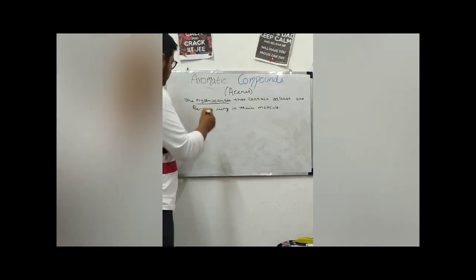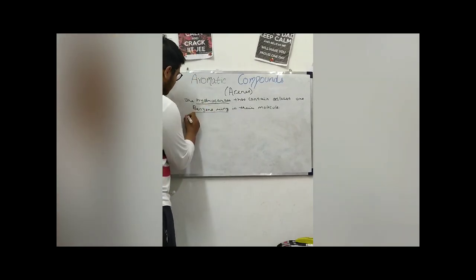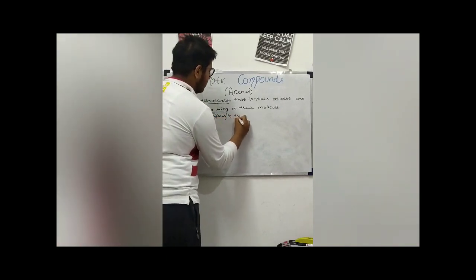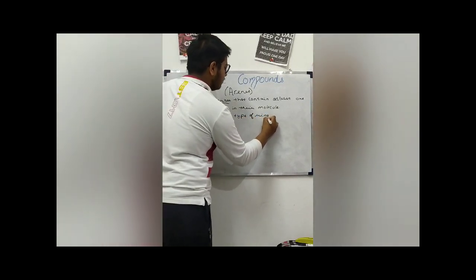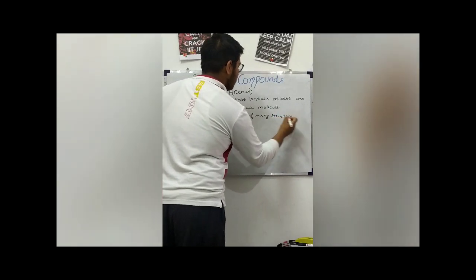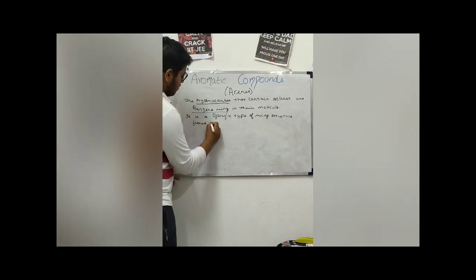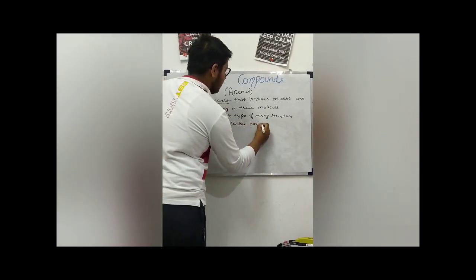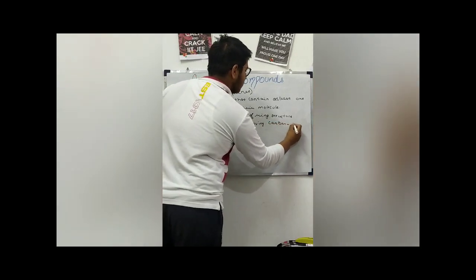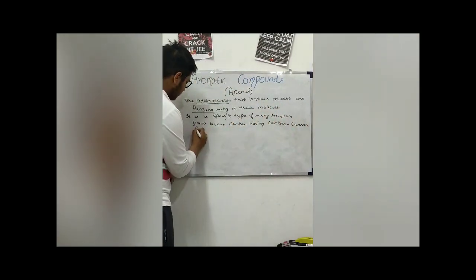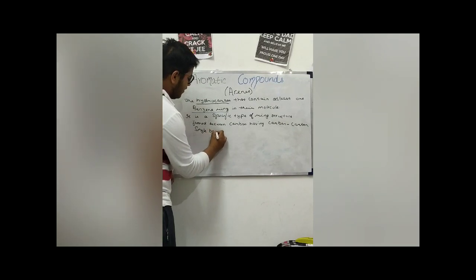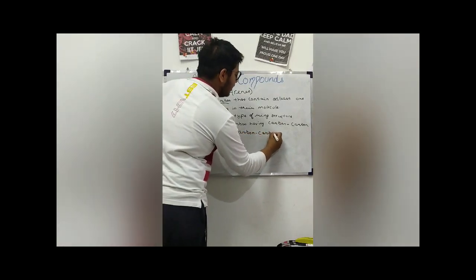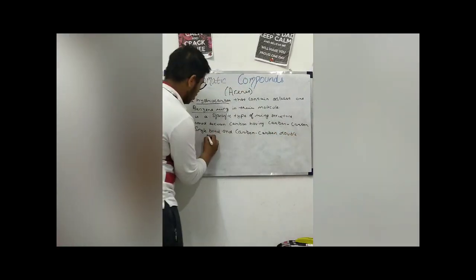Now what is a benzene ring? A benzene ring is a specific type of ring structure formed between carbons having carbon-carbon single bonds and carbon-carbon double bonds in alternating positions.